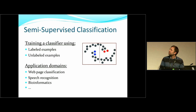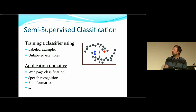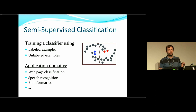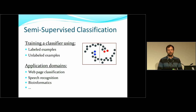I think it's a very relevant application in practice. Examples include web page classification, speech recognition, and bioinformatics. It's especially important in medical applications, because very often you have a lot of data but not a lot of labels. In medical settings, you'd need experts to label cases — a doctor might only be able to label 100 out of 5,000 cases. That's where semi-supervised learning methods are useful.